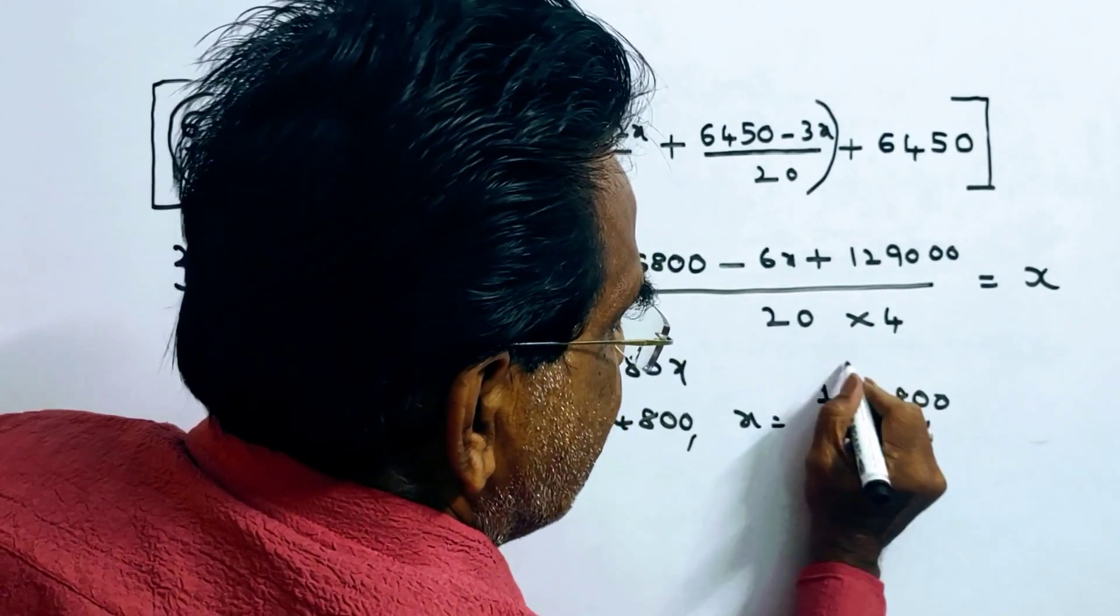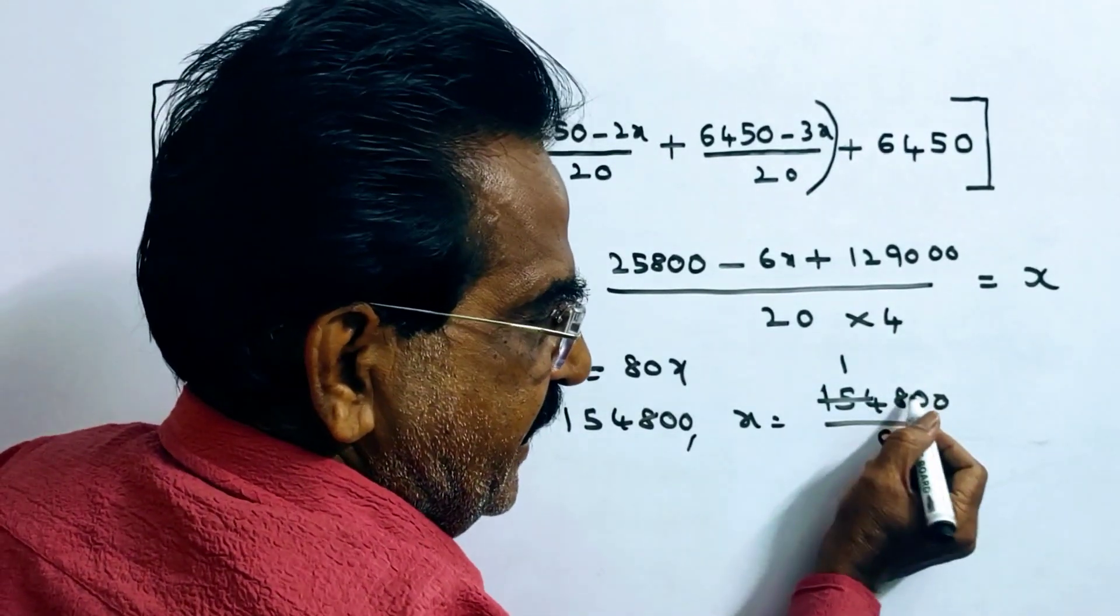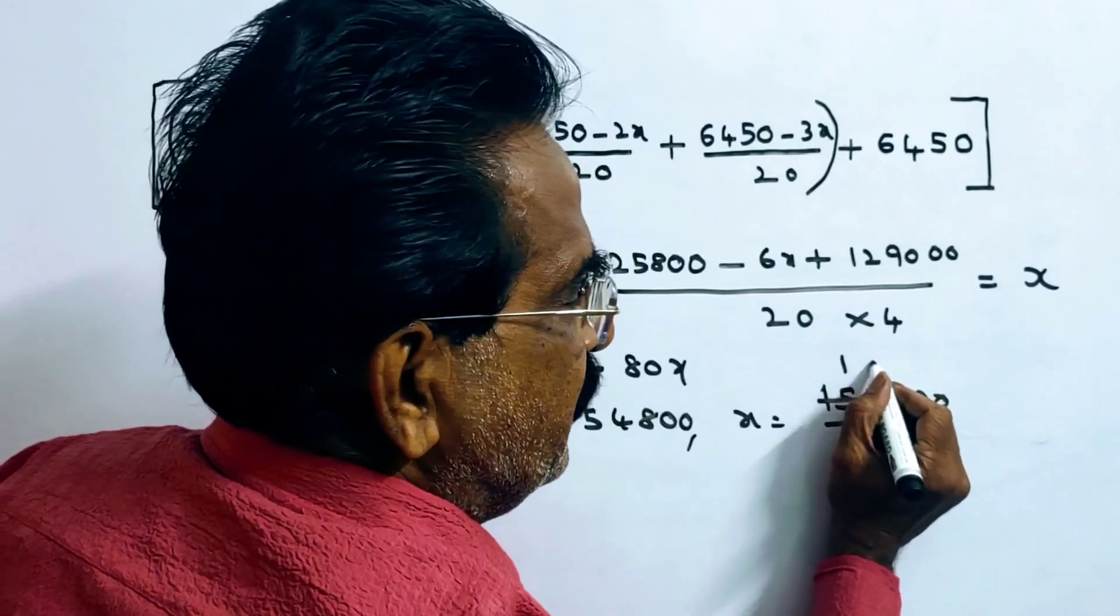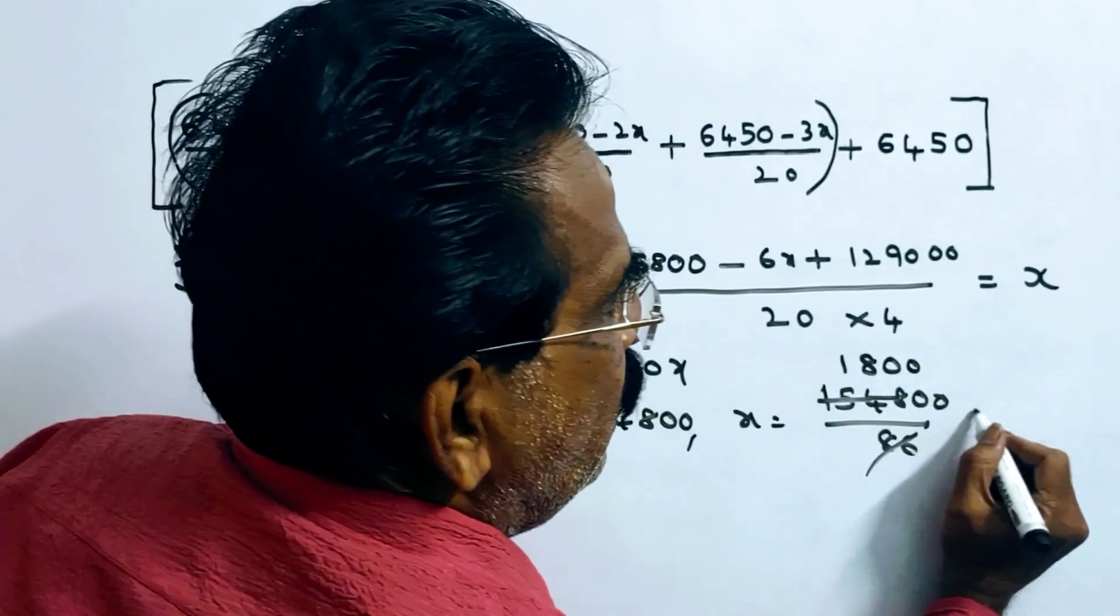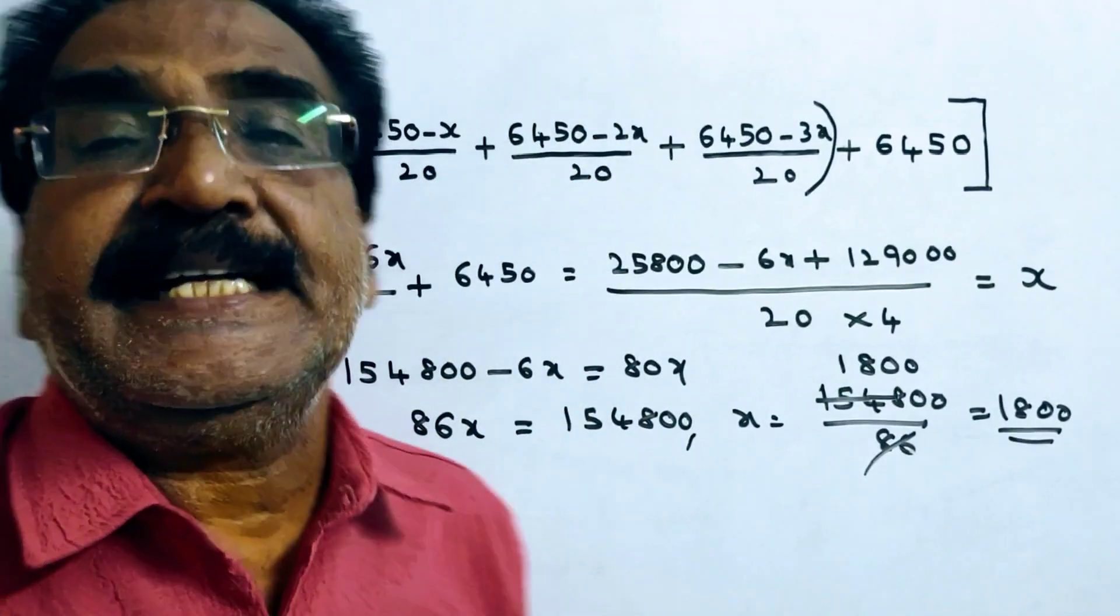154,800 divided by 86: once 86, 14 plus 54, 68, 688 divided by 86 equals 8. So the equal annual installment must be 1800.